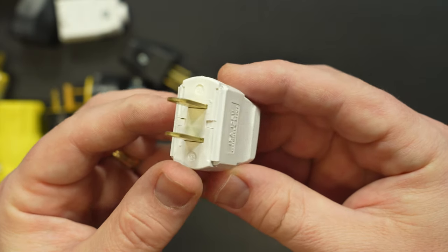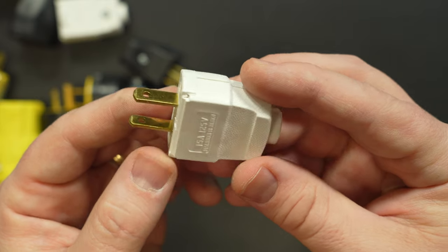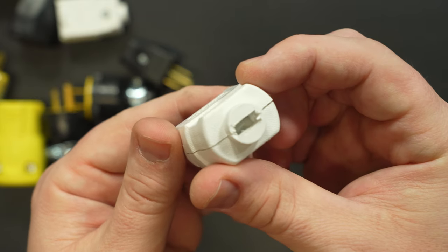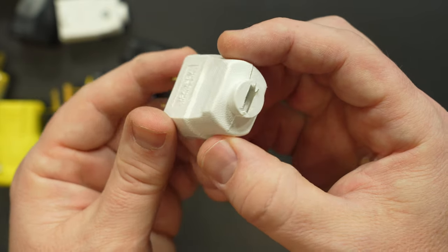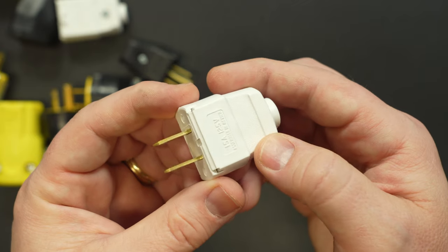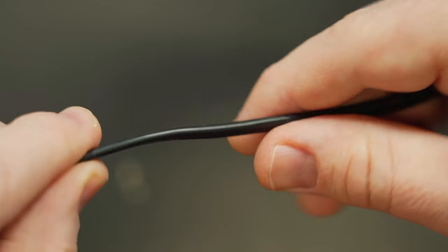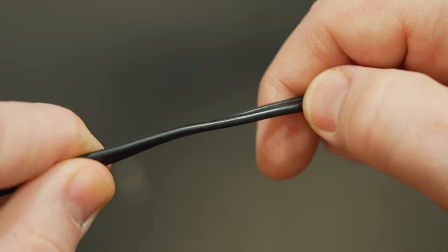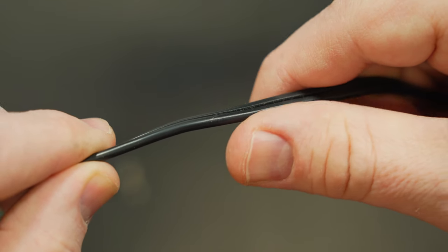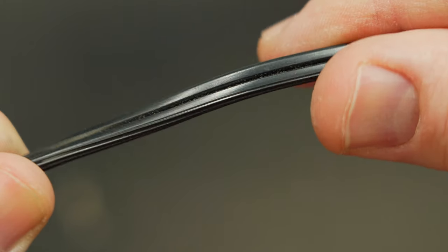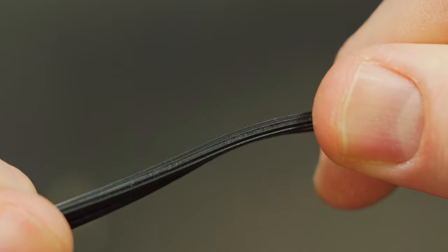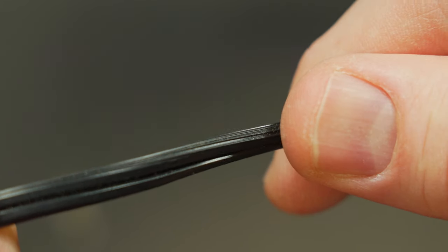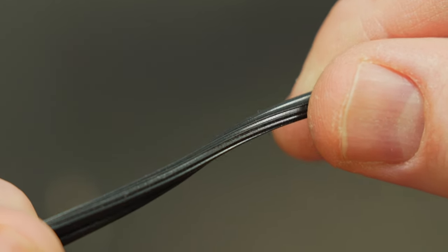All right let's go over how to wire a NEMA 1-15 plug replacement. As I mentioned these are the plugs that only have the two prongs or conductors. One is for the hot wire and one is for the neutral. It's easy to mix up which wire goes where so pay close attention to the jacket around the conductors of the cord that you're repairing. The neutral wire will typically have raised ridges or bumps along the outer edge of the outside insulation. The hot wire will be smooth.